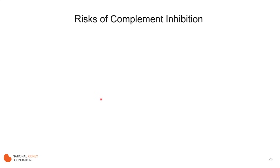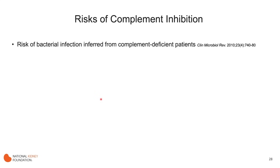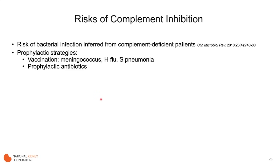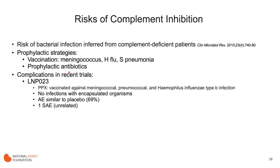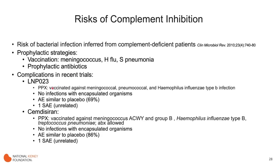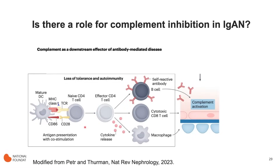The major risk of complement inhibition is probably an increased risk of infection. This can be inferred from the fact that patients with congenital deficiencies in complement proteins are at increased risk of bacterial infections with encapsulated organisms. However, the trial results show these drugs appear quite safe. Studies include vaccination against high-risk organisms and in some cases allow prophylactic antibiotics. In both the LNPO23 study and the CEMDSIRAM study, there was really no risk signal, with results quite similar to placebo. So while infection is a concern, no major risk has been seen in those studies.